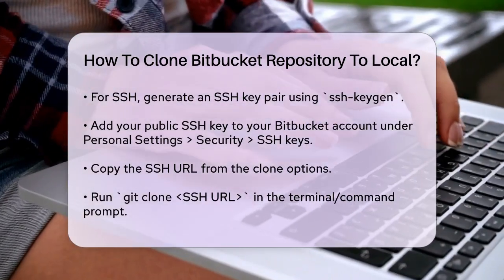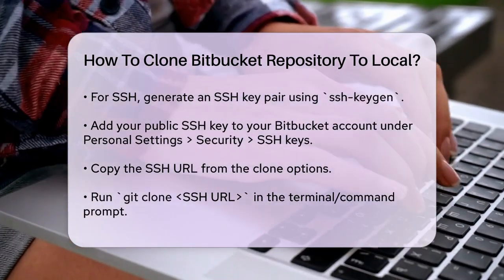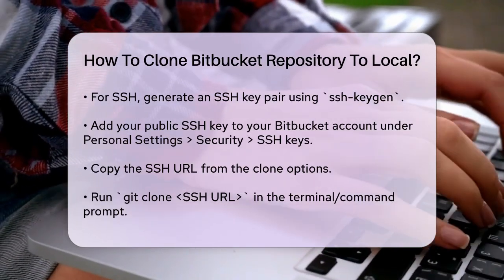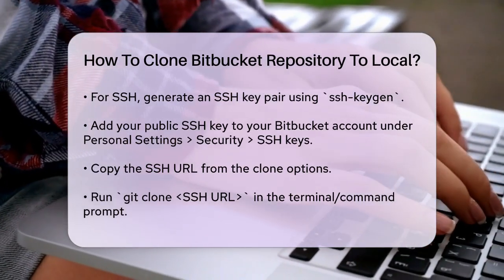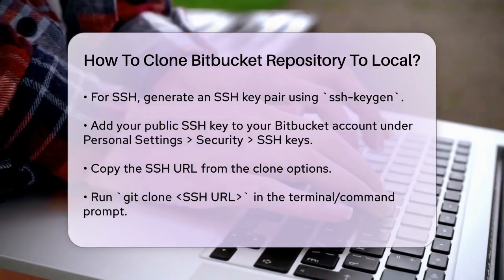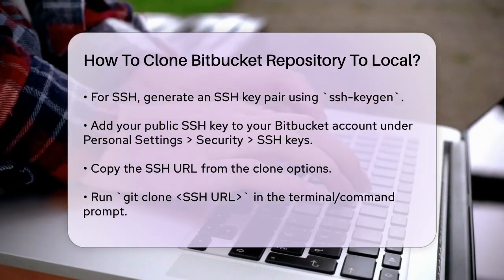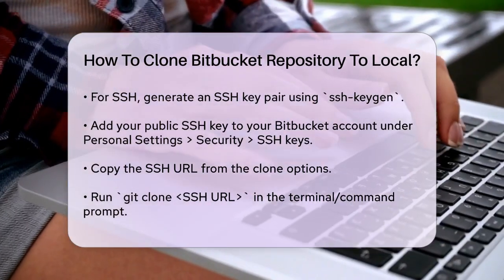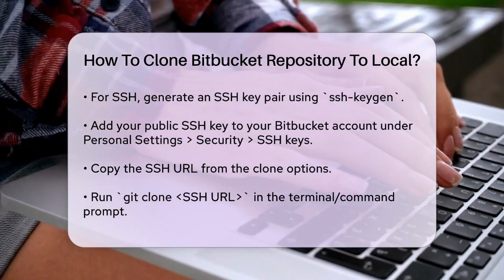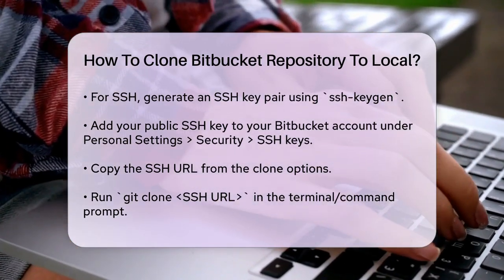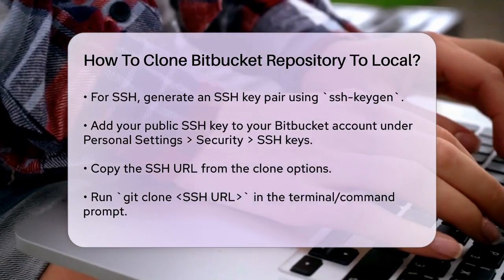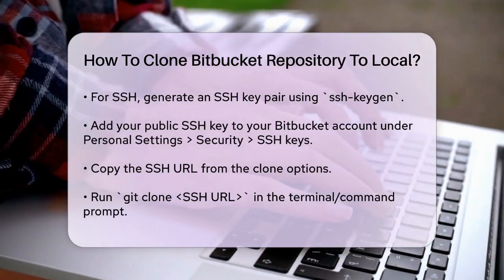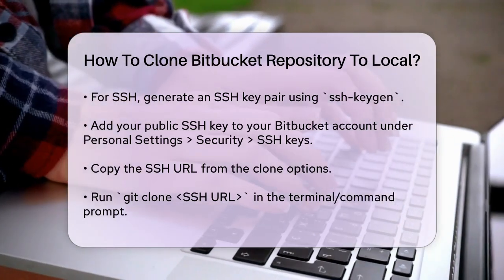Now, select the SSH option from the drop-down menu and copy the provided URL. It will look something like: git@bitbucket.org:TeamSense/documentation-tests.git. Open your terminal or command prompt, navigate to the directory where you want to clone the repository, and run the command: git clone git@bitbucket.org:TeamSense/documentation-tests.git.